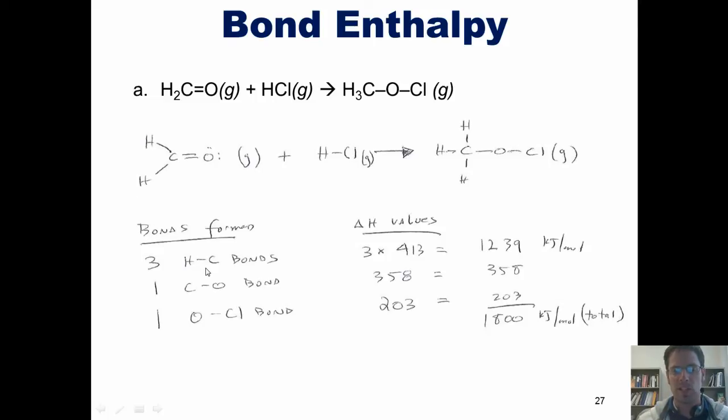For instance, a hydrogen-carbon single bond is worth 413 kilojoules per mole. Because there are three of them, those combined come to 1,239 kilojoules per mole.